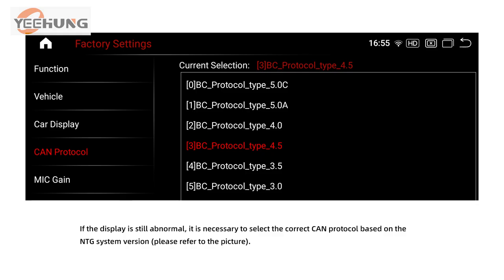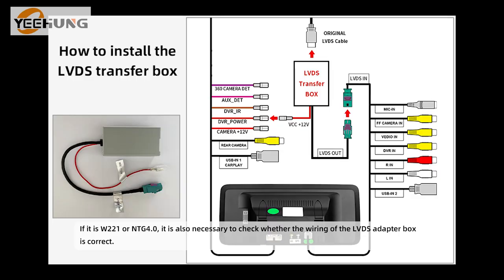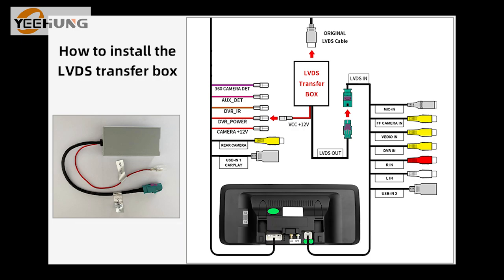If the display is still abnormal, it is necessary to select the correct CAN protocol based on the NTG system version. If it is W221 or NTG 4.0, it is also necessary to check whether the wiring of the LVDS adapter box is correct.